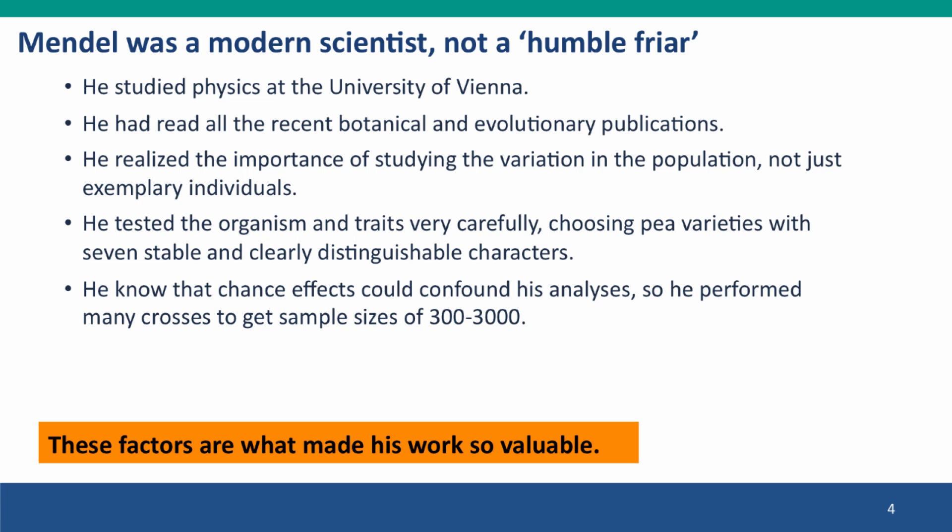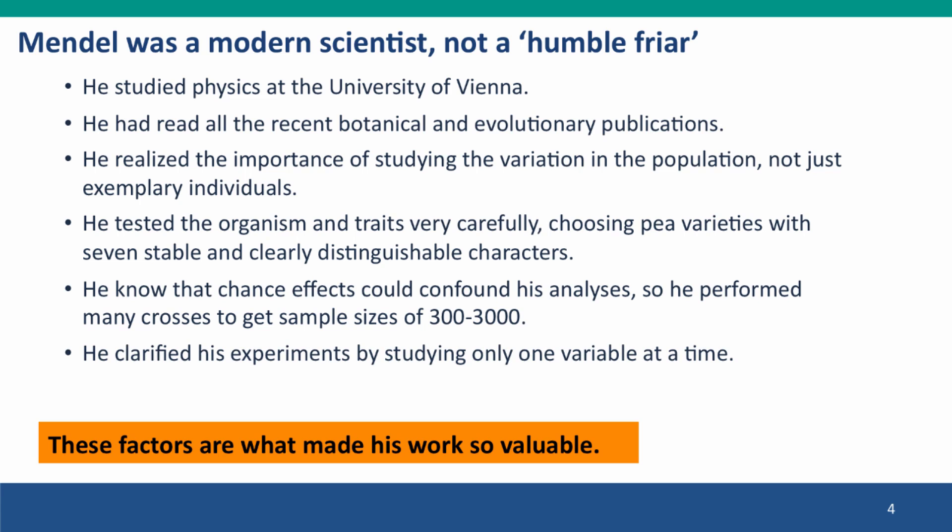He'd studied statistics. He knew that he couldn't just do small experiments and get small numbers, because chance effects would confound his results. And so he did his experiments over and over and over, so he could get sample sizes in the hundreds and thousands, so he'd have numbers that he could trust. He did another revolutionary thing: he had lots of questions, everyone had lots of questions about how heredity worked, but he only studied one variable at a time. And by doing this, he was able to keep his results simple enough that he could interpret them carefully and draw solid conclusions. If you study many variables at once, you'll never figure out what's going on.